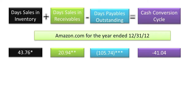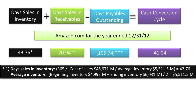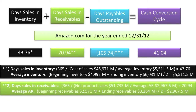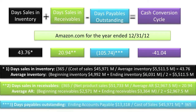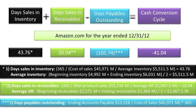If you are interested in knowing how each of these variables were computed, here they are below: Days Sales in Inventory, Days Sales in Receivables, Days Payables Outstanding. Please stop the video and review these computations based on what you learned from the Operating Cycle video and from this topic regarding Days Payables Outstanding, to ensure you understand where the numbers are coming from.